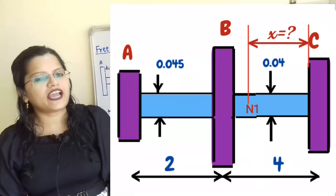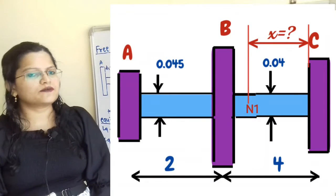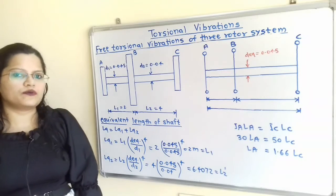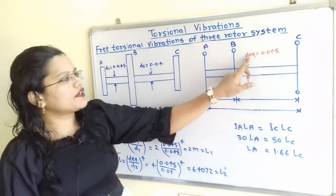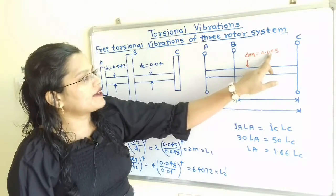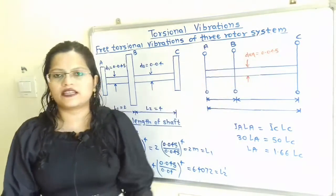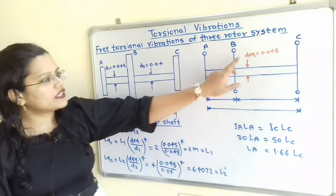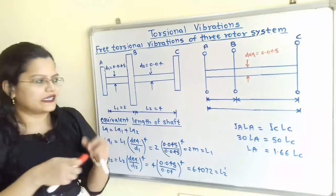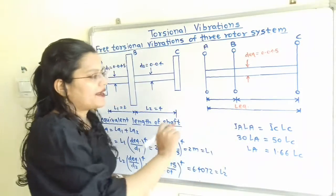This is the actual diagram; we have to show the equivalent system. The equivalent system should be of uniform diameter and we have to assume any value. We will assume D equivalent is equal to 0.045 meter. For this uniform diameter, we have to calculate the equivalent length L equivalent.